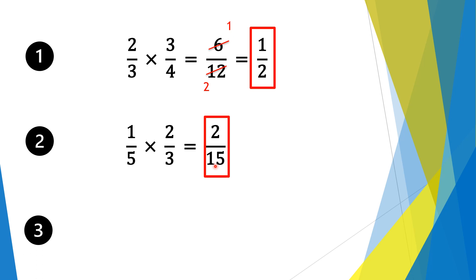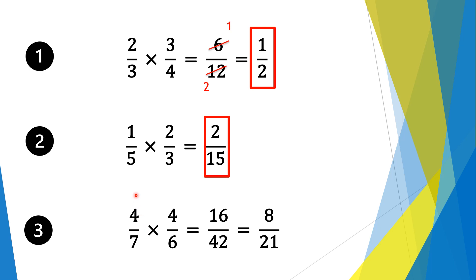Moving on to question 3. We have 4/7 times 4/6. Again, we times the numerators first: 4 times 4 is 16. Then we times the denominators second: 7 times 6 is 42. Now top and bottom is divisible by 2. 16 divided by 2 is 8, and 42 divided by 2 is 21. So our solution is 8 over 21.